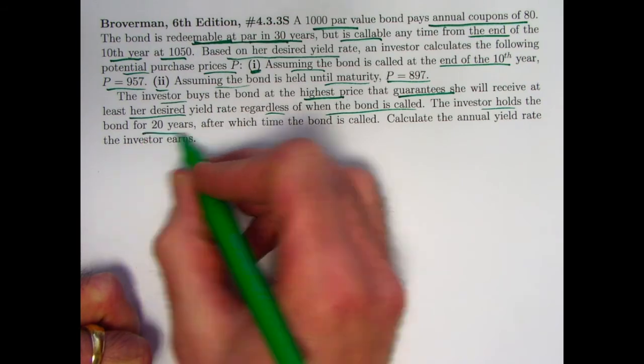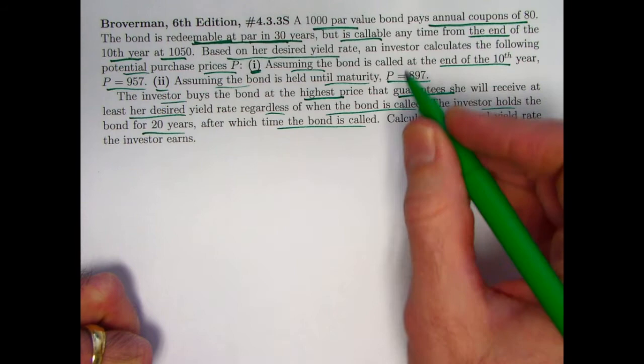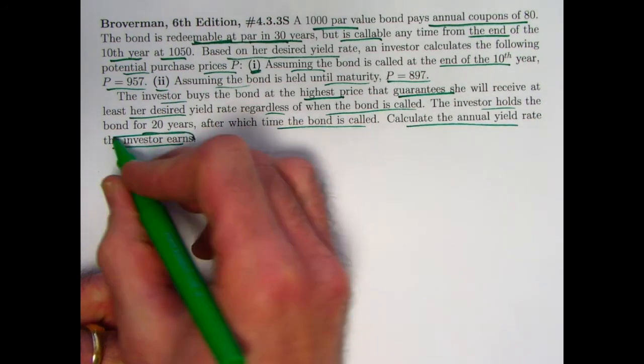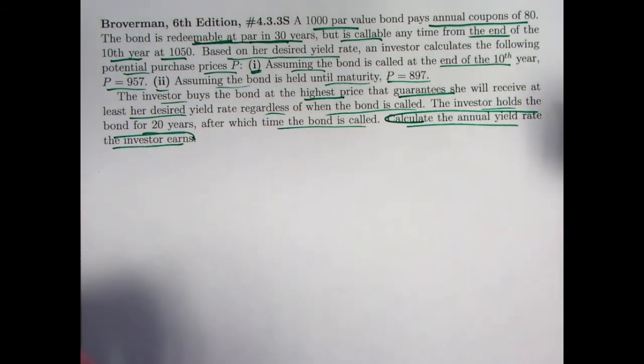The investor holds the bond for 20 years, at which time the bond is called. Based on 20 years, N equals 20 because it's annual coupons, calculate the annual yield rate that the investor earns, which again will evidently be higher than the minimal yield rate that come from 1 and 2.